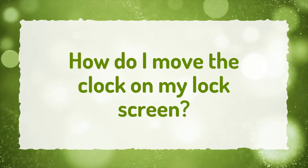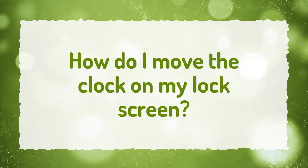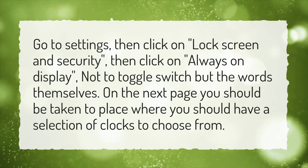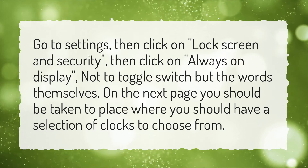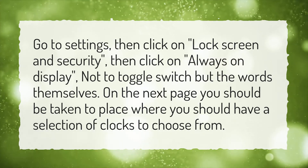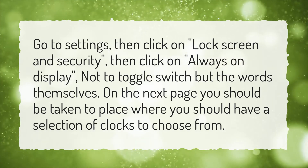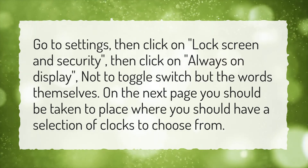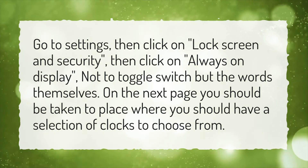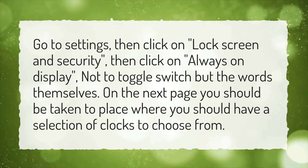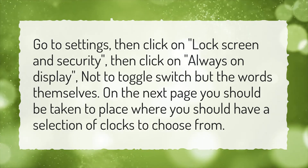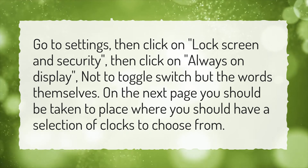How do I move the clock on my lock screen? Go to Settings, then click on Lock Screen and Security, then click on Always On Display — not the toggle switch, but the words themselves. On the next page you should be taken to a place where you should have a selection of clocks to choose from.